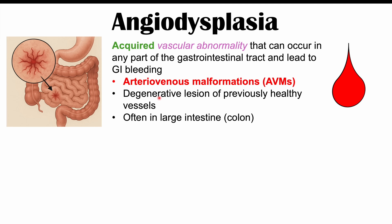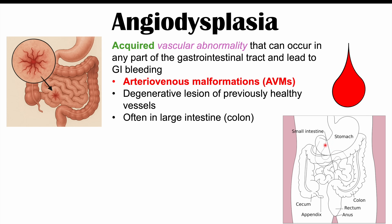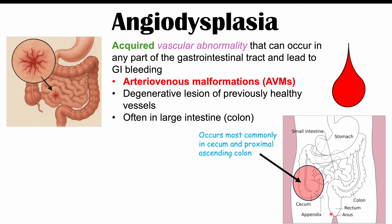These vascular abnormalities are most often found in the large intestine or colon, though they can occur in any part of the GI tract. Looking at the anatomy — stomach, small intestines, then large intestine including the cecum, ascending colon, transverse, descending, sigmoid colon, rectum, and anus — angiodysplasia occurs most commonly in the cecum and proximal ascending colon.